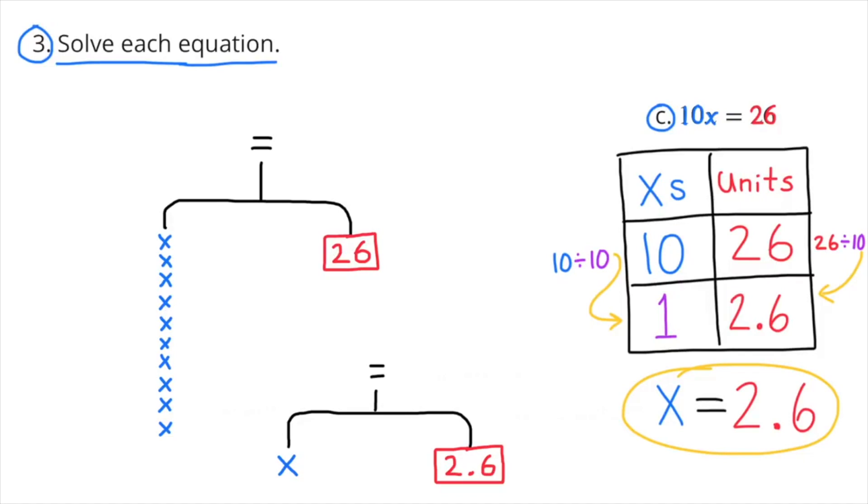So 1 X equals 2 and 6 tenths. The hanger shows in balance 10 X's on the left and 26 units on the right. And underneath that, you see a hanger in balance with 1 X on the left and 2 and 6 tenths on the right. X equals 2 and 6 tenths.